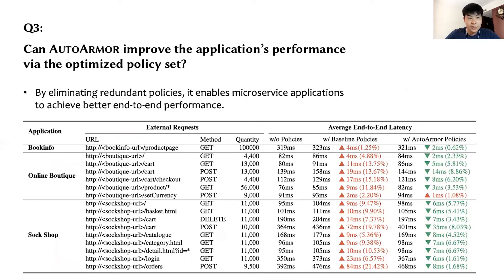The third question is: can AutoArmor improve the application's performance via the optimized policy set? We measured the end-to-end performance of the applications when deploying the policy set generated by the baseline method and AutoArmor separately. The result shows that by eliminating redundant policies, it accelerates the runtime policy check, thereby enabling the application to achieve better overall performance.